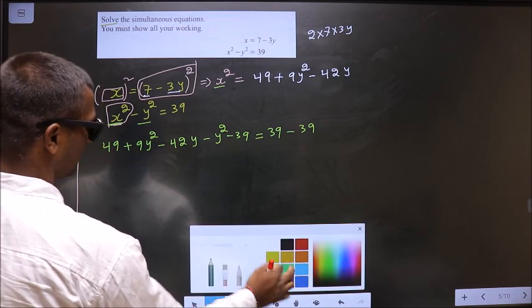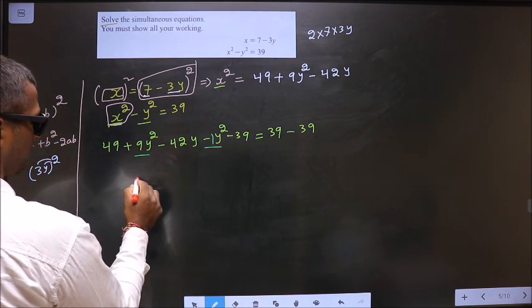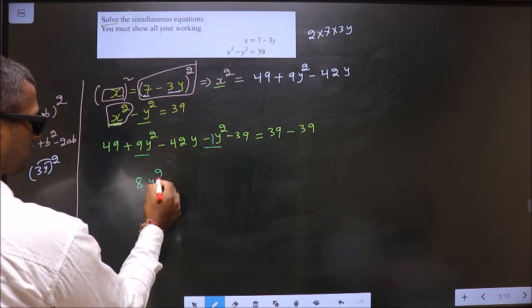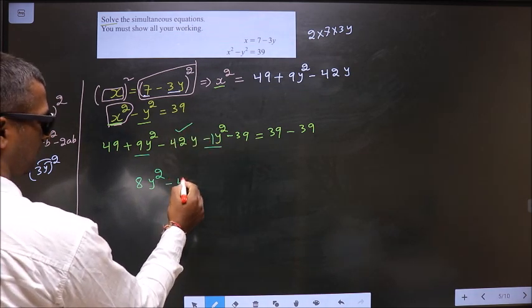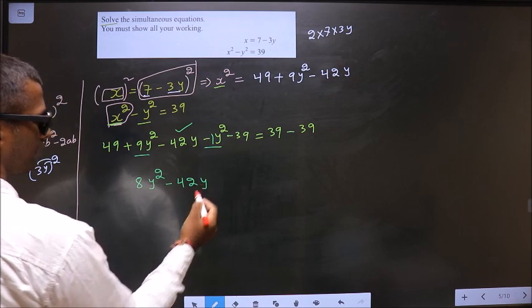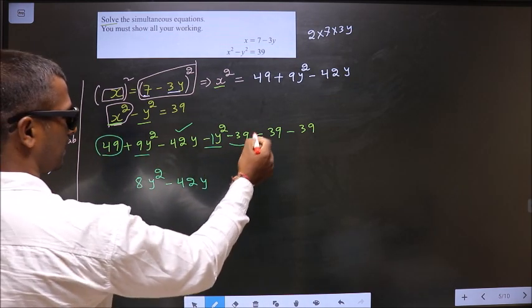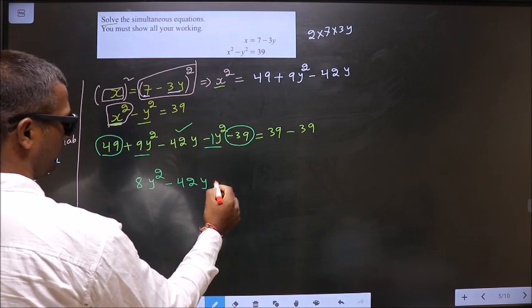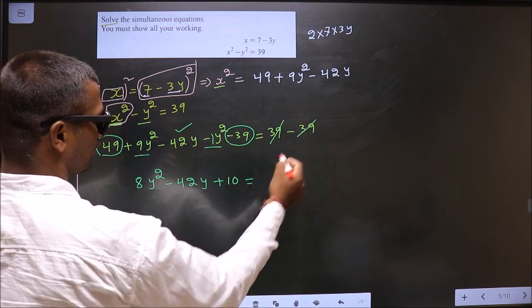Starting with plus 9y square minus 1y square is 8y square. I have only one y term that is minus 42y. Now, the constants plus 49 minus 39 will be plus 10 equal to this cancel out 0.